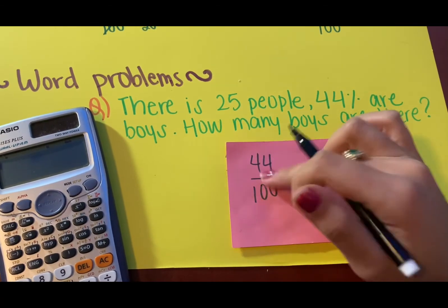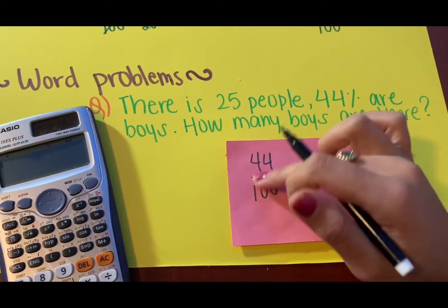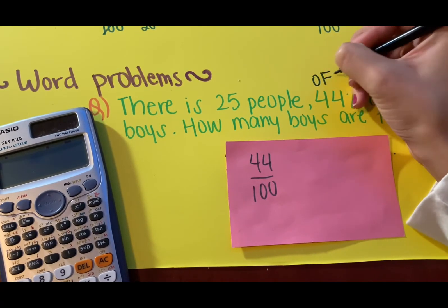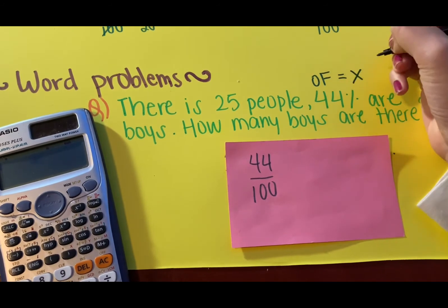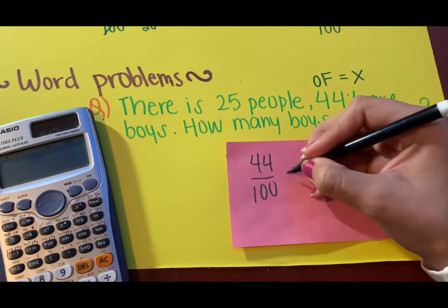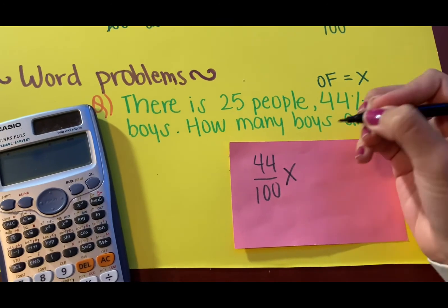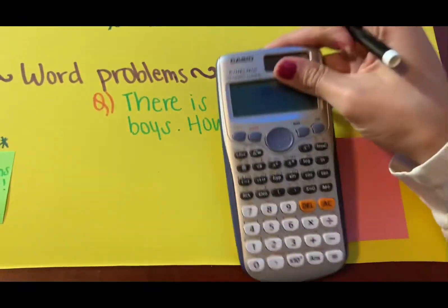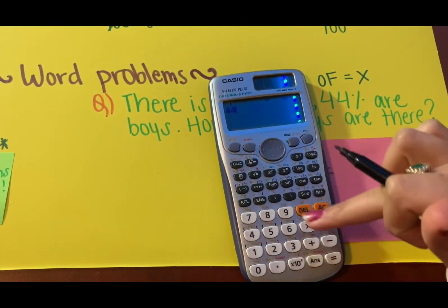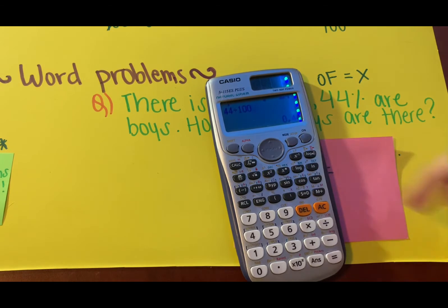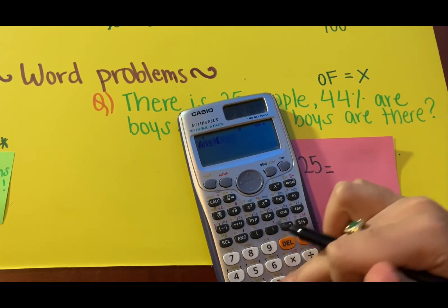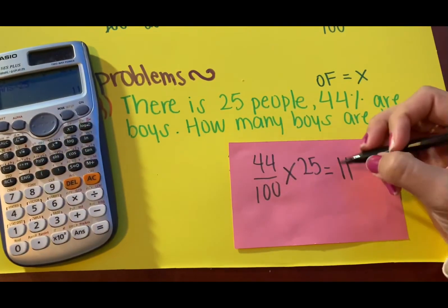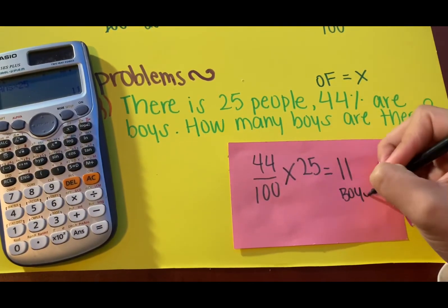So out of... remember 'off' means multiplication. So without even thinking further, just put the multiplication there. Out of those 25 people. And the next step is just take your calculator, 0.44, and then you multiply by 25. You get 11. So there are 11 boys in those 25 people. Very easy.